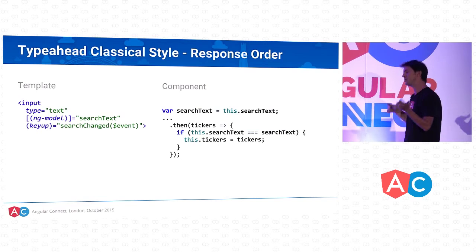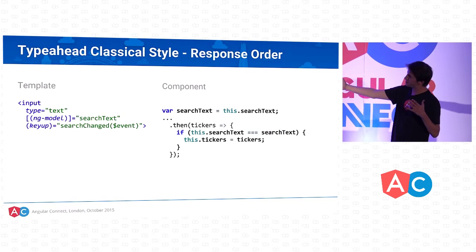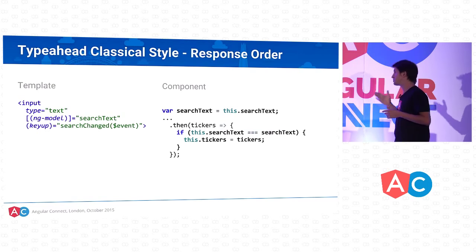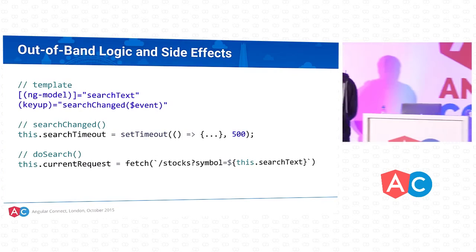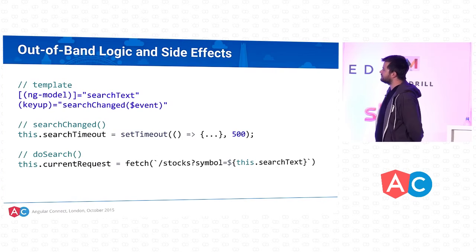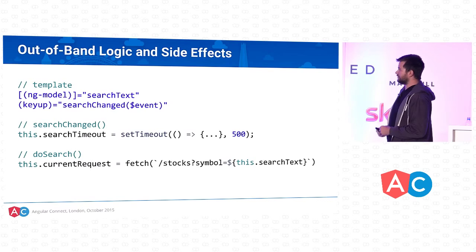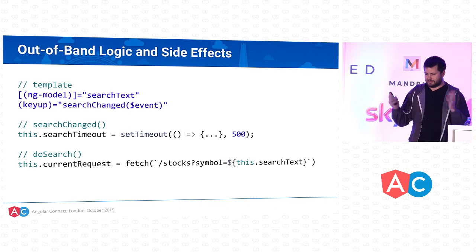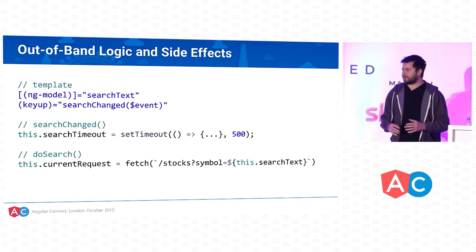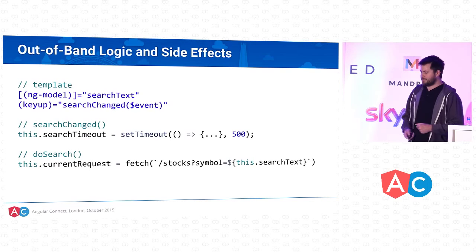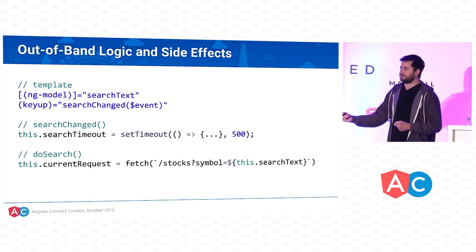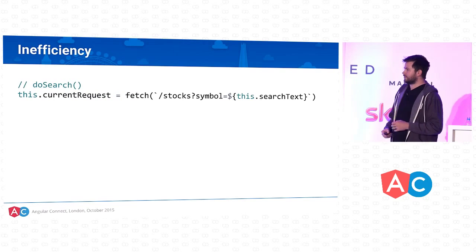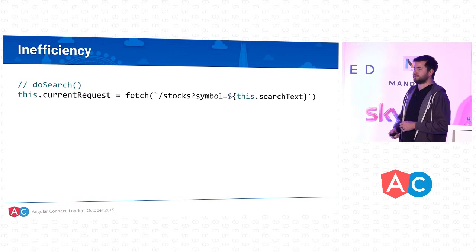You also have to keep track of responses coming back. If you fire off five requests, you have to ensure the one rendered on screen is the latest one. What are the pitfalls? We have side effects and out-of-band logic — we're changing things in places not clearly part of our event flow. The searchText, searchTimeout, and currentRequest are all component properties that can be mutated from anywhere, making it harder to test because we have many more code paths to consider.